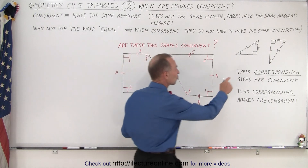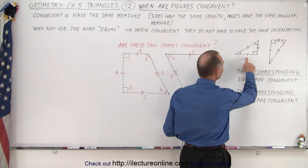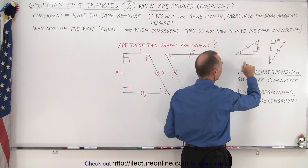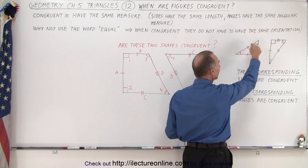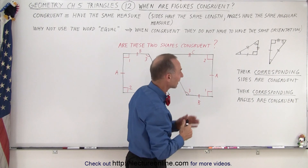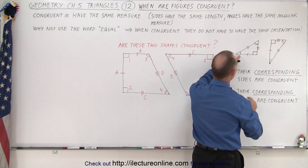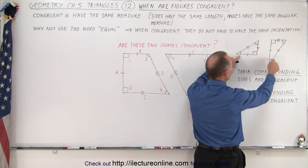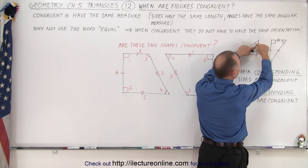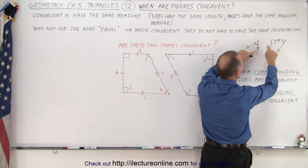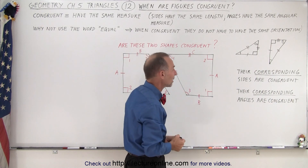Here we can see two triangles that are not oriented in the same way. Notice that with sides we put little lines through them — one line, two little lines, three little lines — and the same markings appear on the other triangle. With angles, we indicate a right angle or a 90-degree angle, or we use curved little lines — one line for one pair, two lines for another. If an angle has one little curved line and its corresponding angle also has one, that indicates they have the same measure. Both right angles have the same 90-degree angular measure.